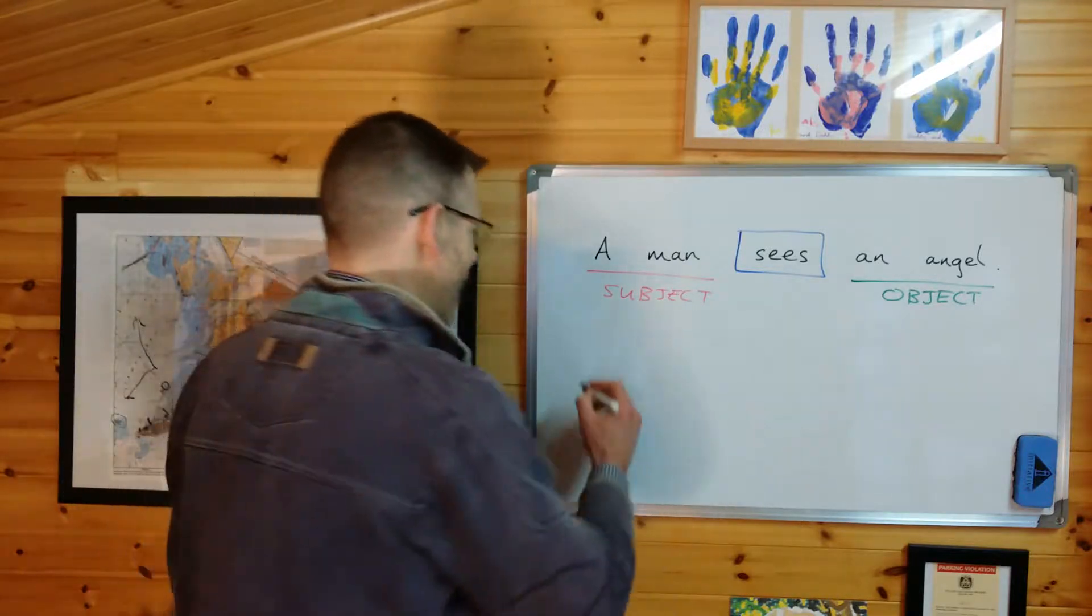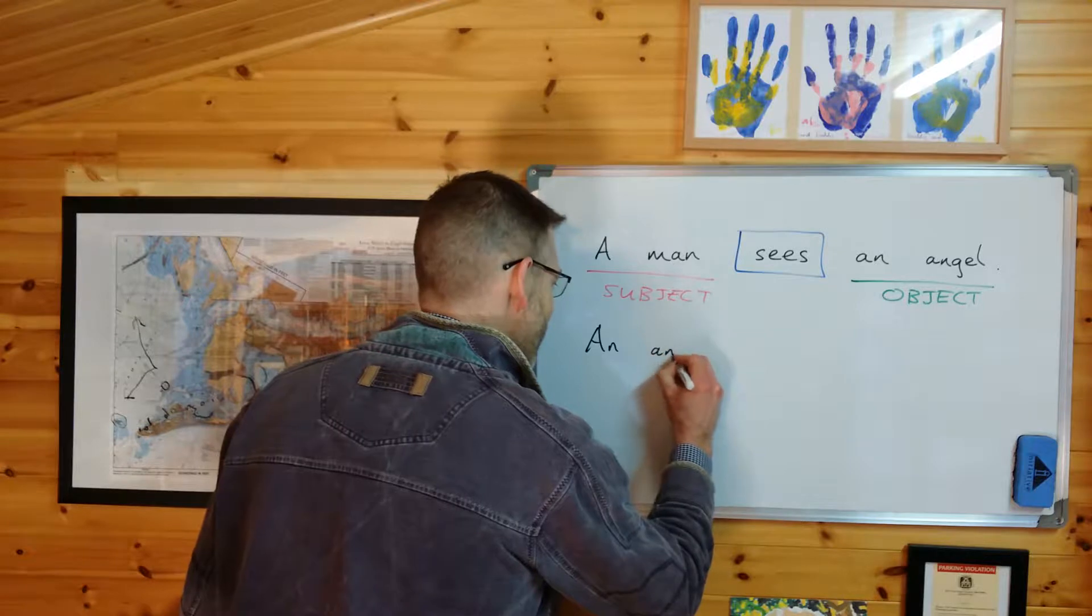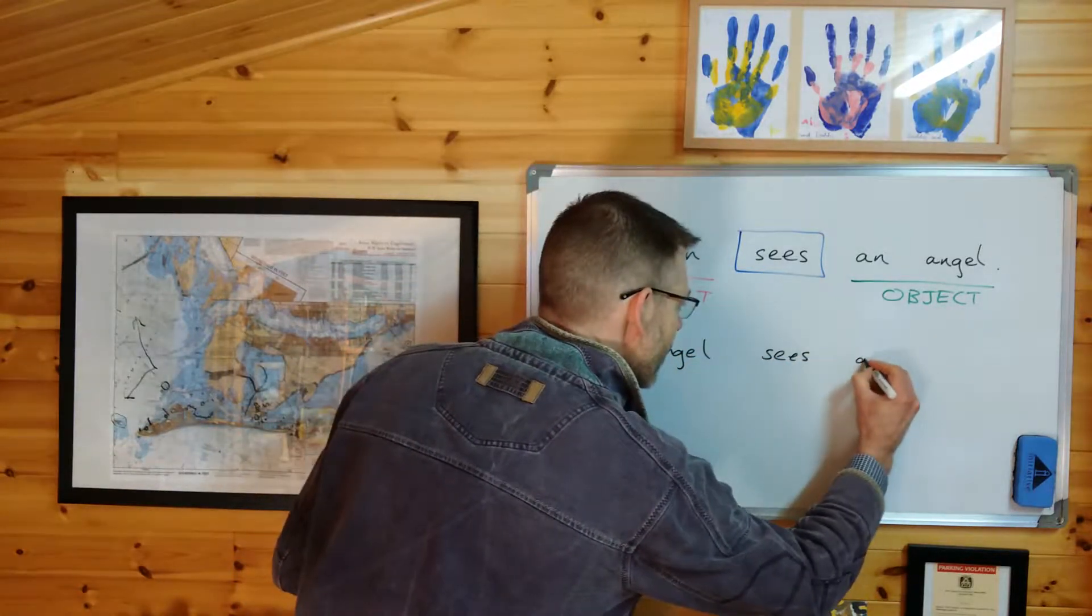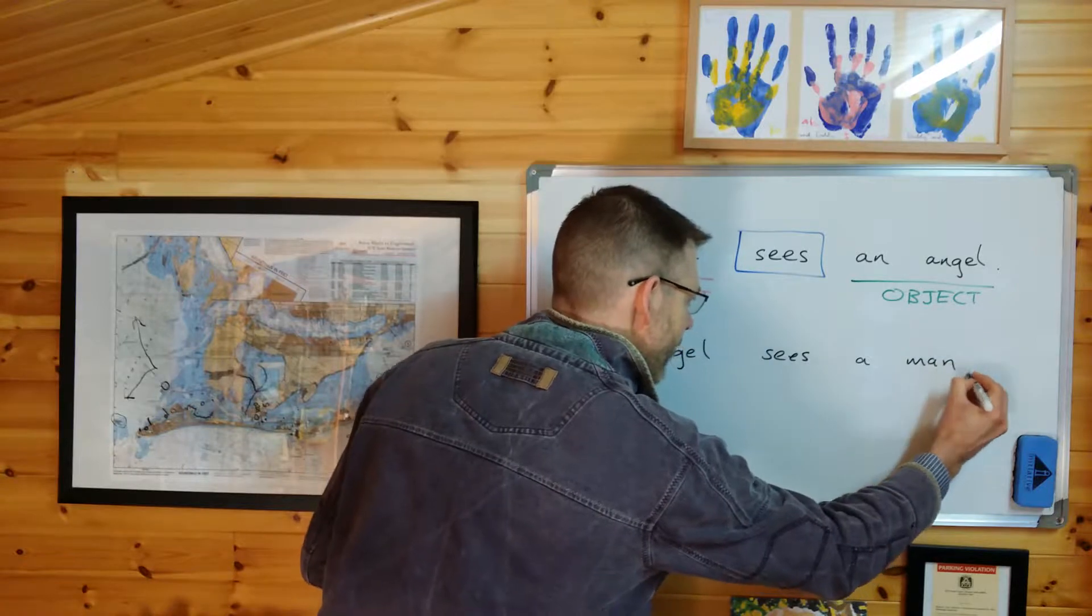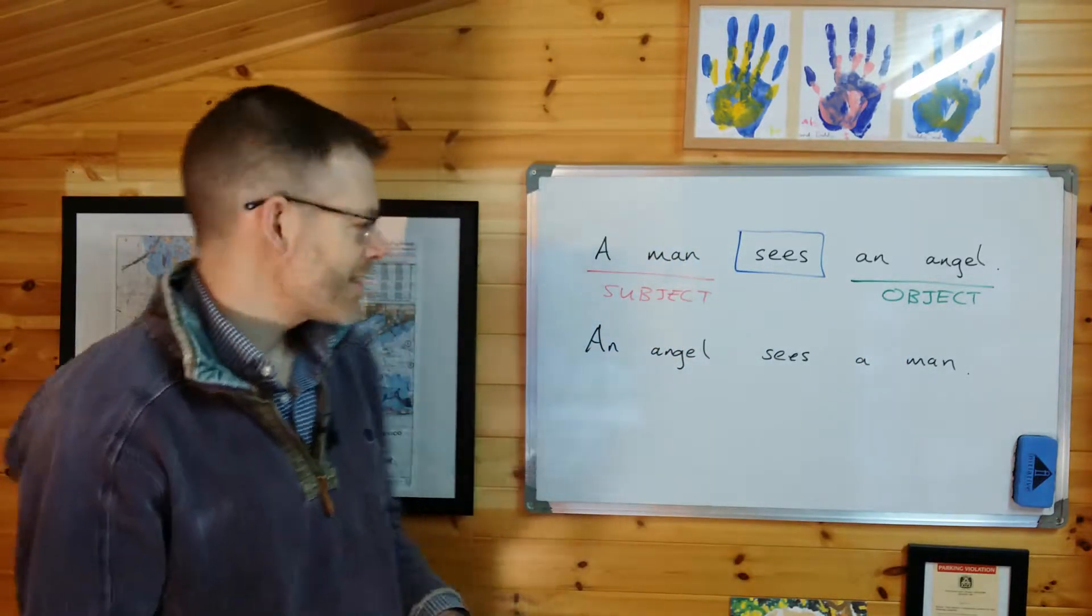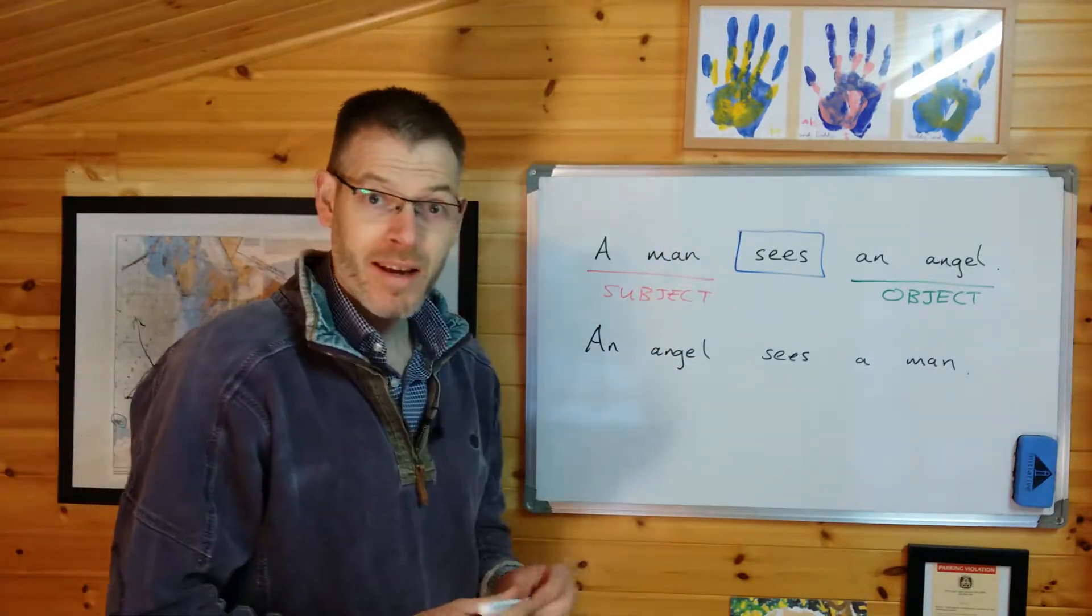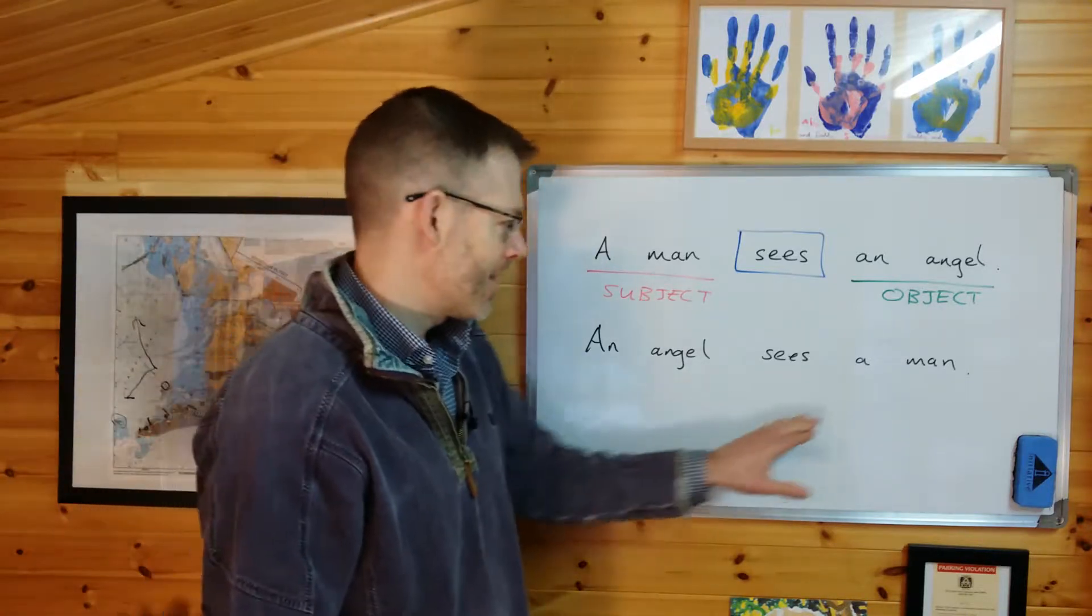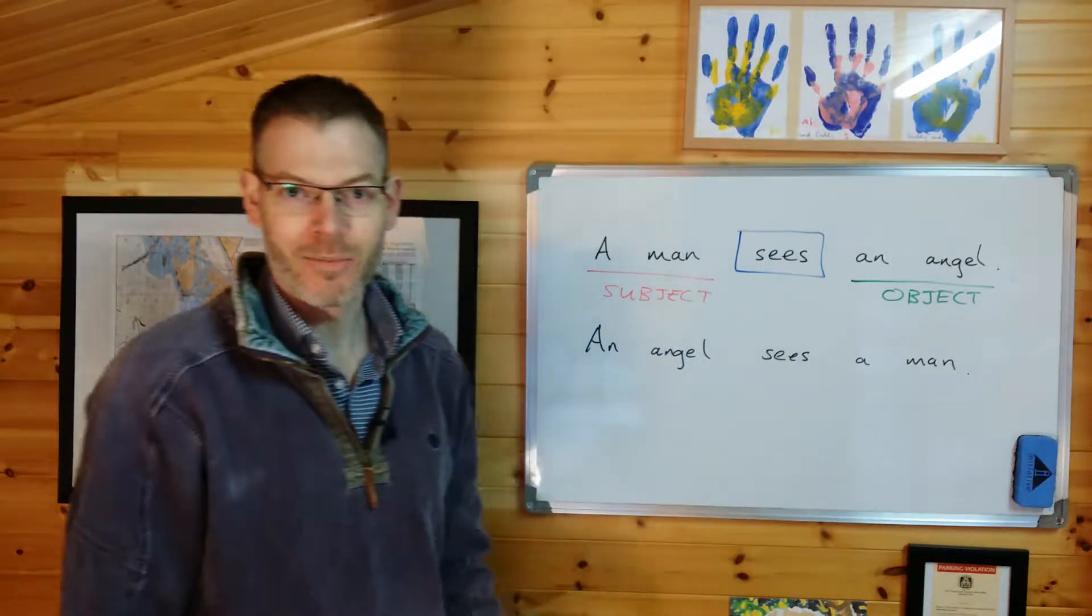and I wrote instead, an angel sees a man, then in this case, you would know because of the word order the verb is still the same, an angel is now the subject, and a man is the object.